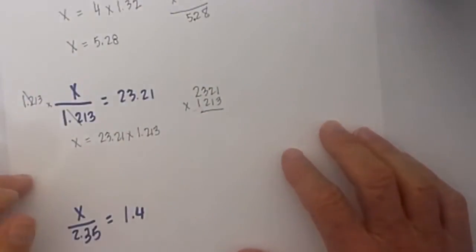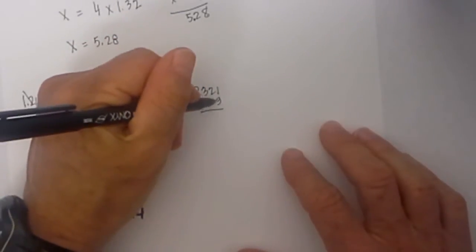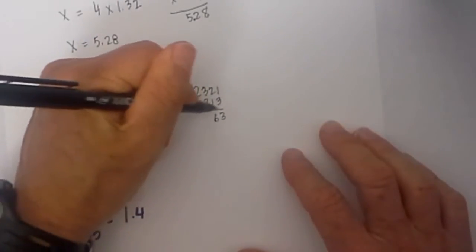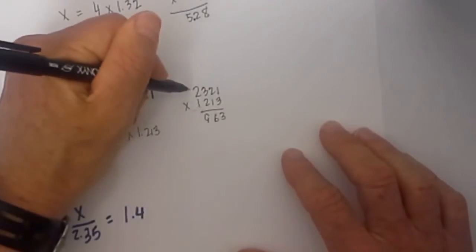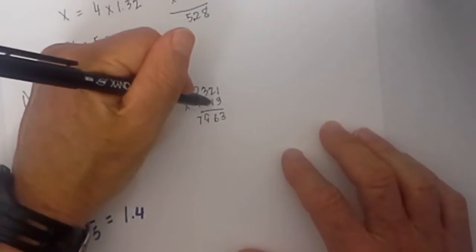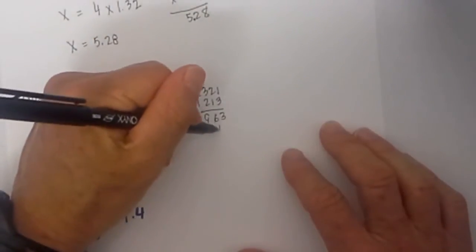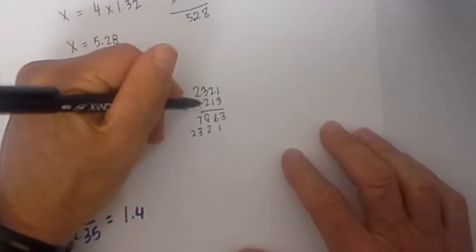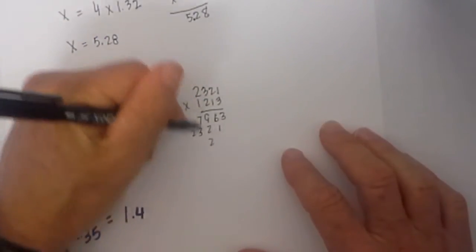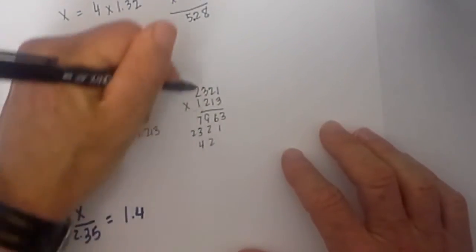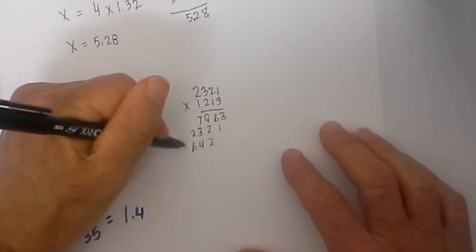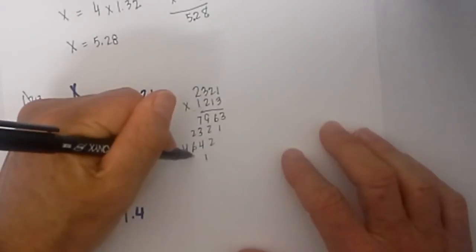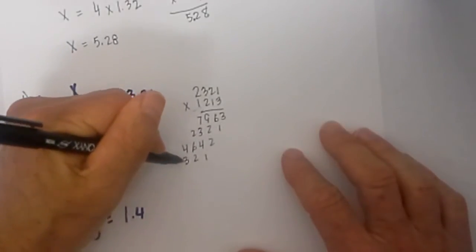Then I start multiplying. Let's go 3 times 1 is 3, 3 times 2 is 6, there is 9 and that is 7. Now we have 1, 2, 3, 2 and then we have 2, 4, 6, 4 and finally we have 1, 2, 3, 2.